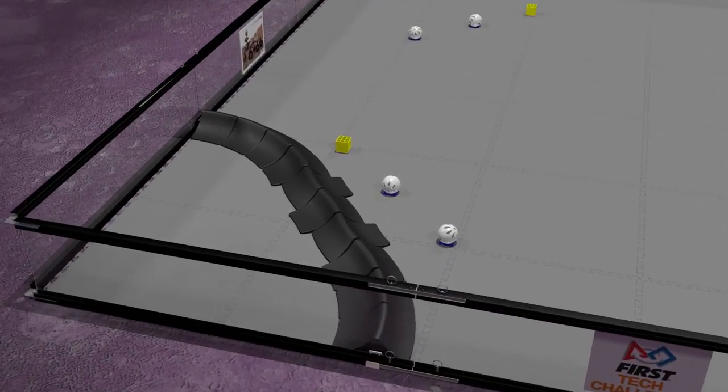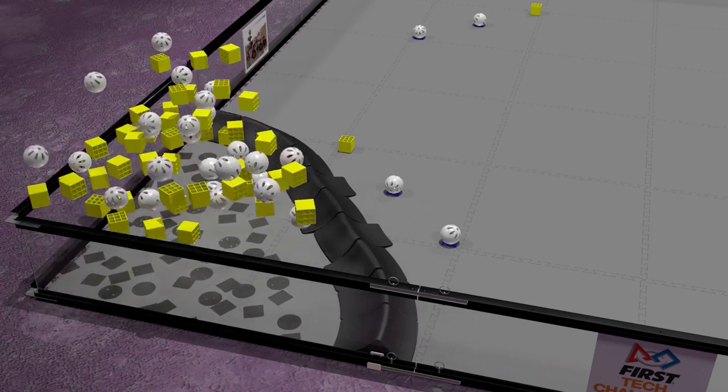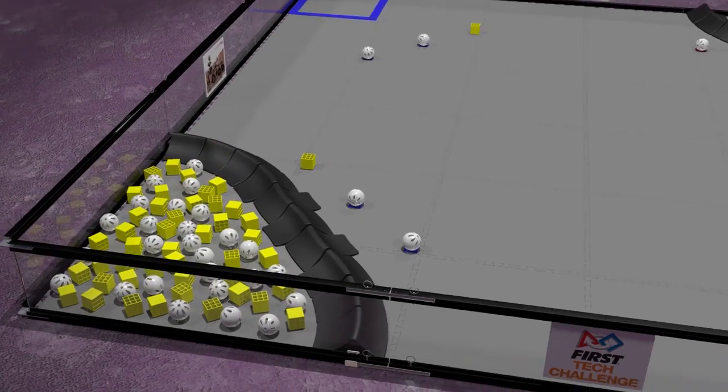Fifty-two silver and 86 gold minerals are divided roughly evenly and placed in each crater.